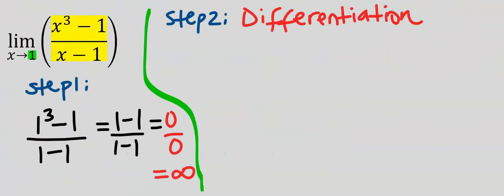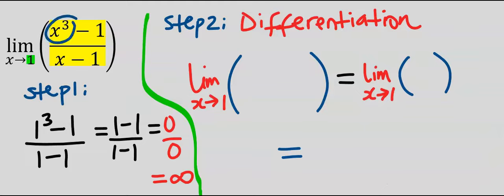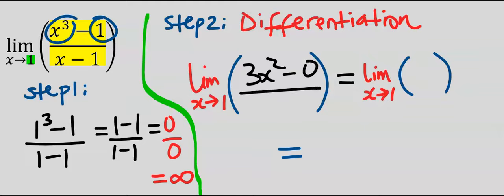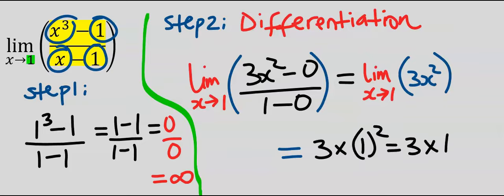Let's try step 2 again using differentiation. Differentiating x to the power of 3 gives 3x squared. Differentiating the constant 1 gives 0. Differentiating x gives 1, and differentiating the constant 1 gives 0. We are now left with 3x squared. Taking the limit of 3x squared as x tends to 1, we have 3 times 1 squared, which is 3 times 1, and the answer is 3 — the same as before.